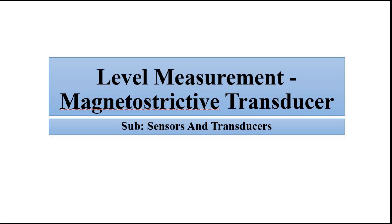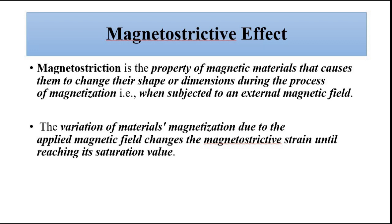We have discussed the magnetostrictive transducer in detail before, but here we will go through it again in a quick manner. Magnetostrictive effect, or magnetostriction, is the property of magnetic materials — particularly certain ferromagnetic materials — which exhibit this property to a great extent. It is the phenomenon in which, when subjected to an external magnetic field during magnetization, they show a change in their shape or size — length, breadth — all of that undergoes change.